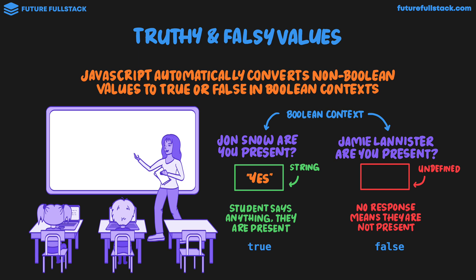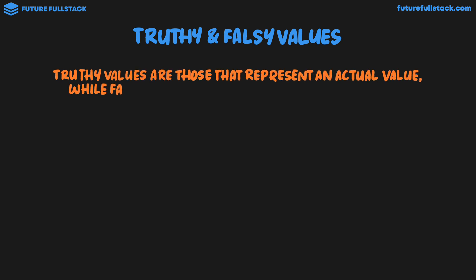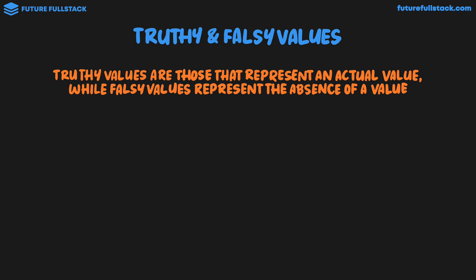So inside a boolean context, values can have this inherent true or false nature, which we call truthy or falsy. A string is a truthy value and undefined is a falsy value. So let's now take a look at all the different truthy and falsy values. Truthy values are those that represent an actual value, while falsy values represent the absence of a value.